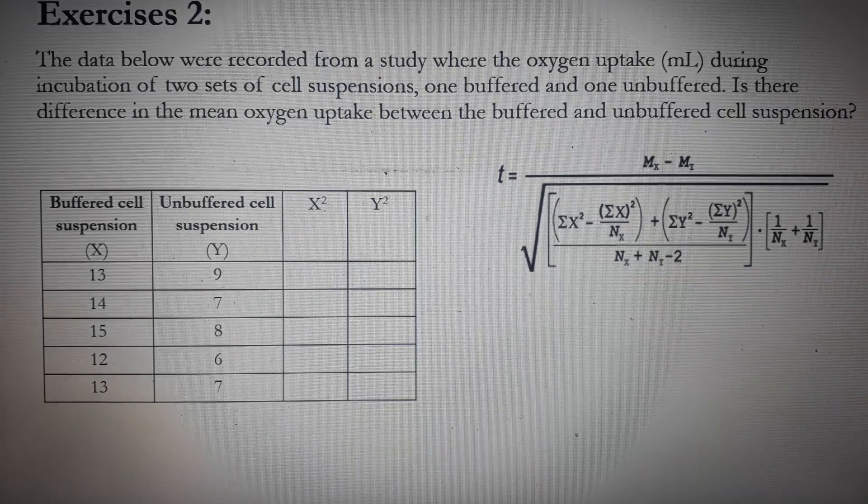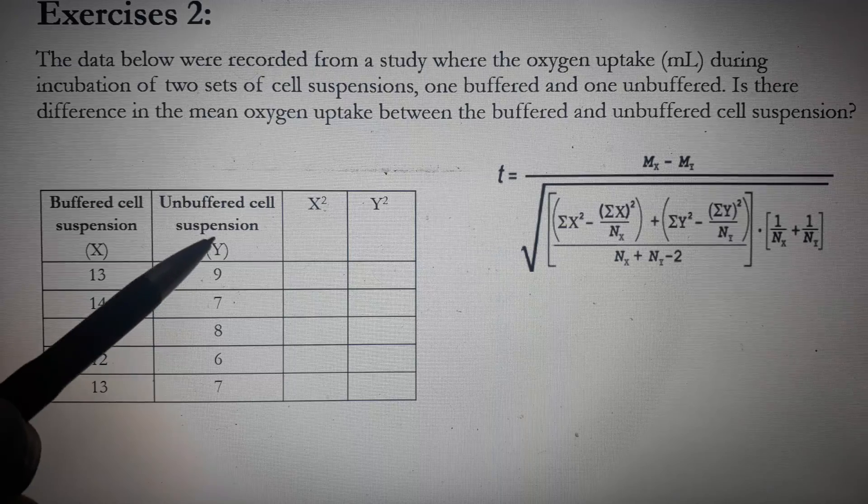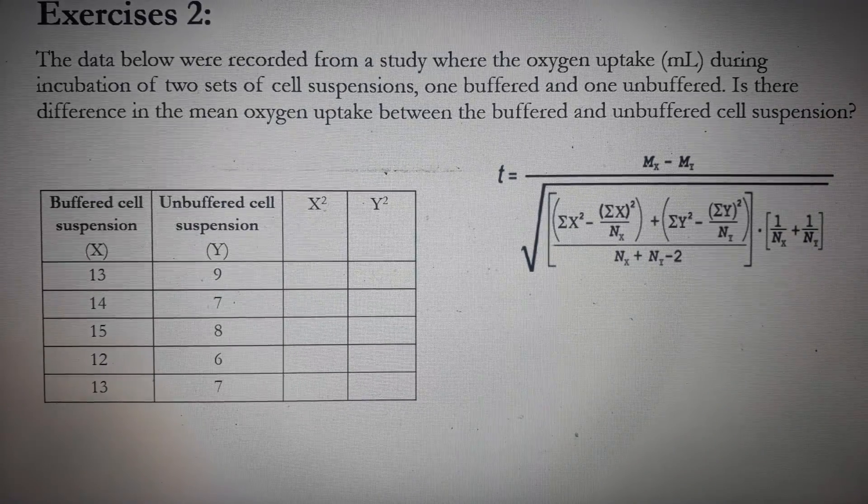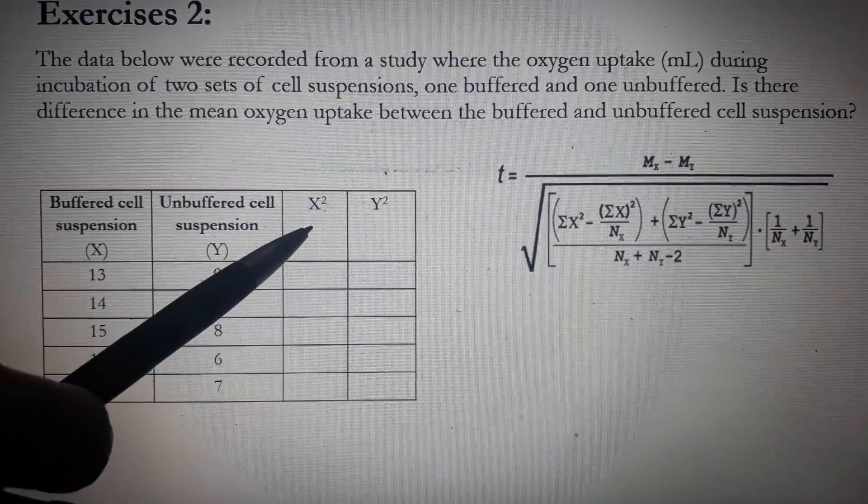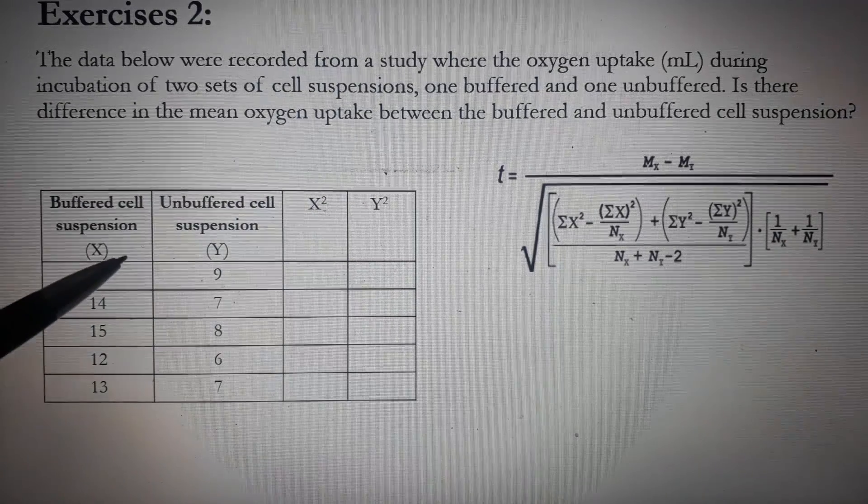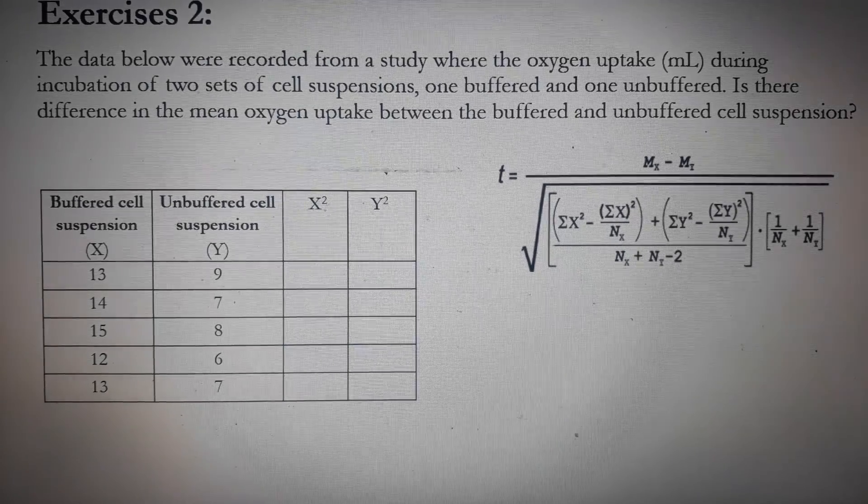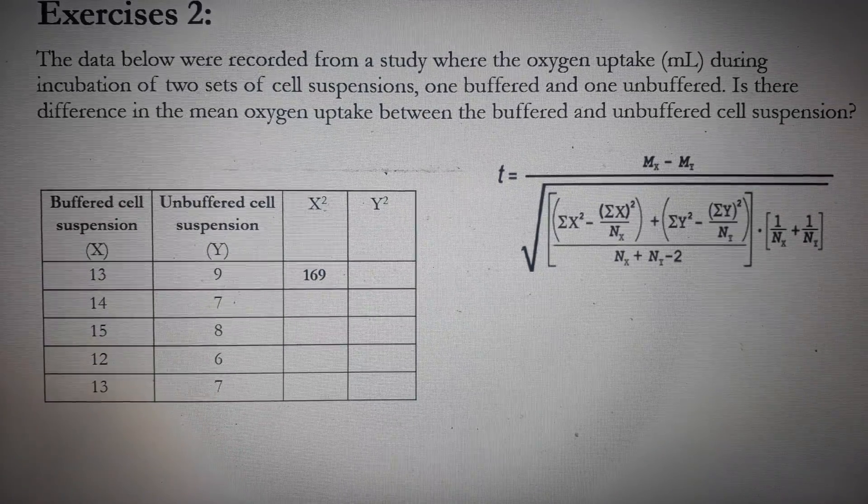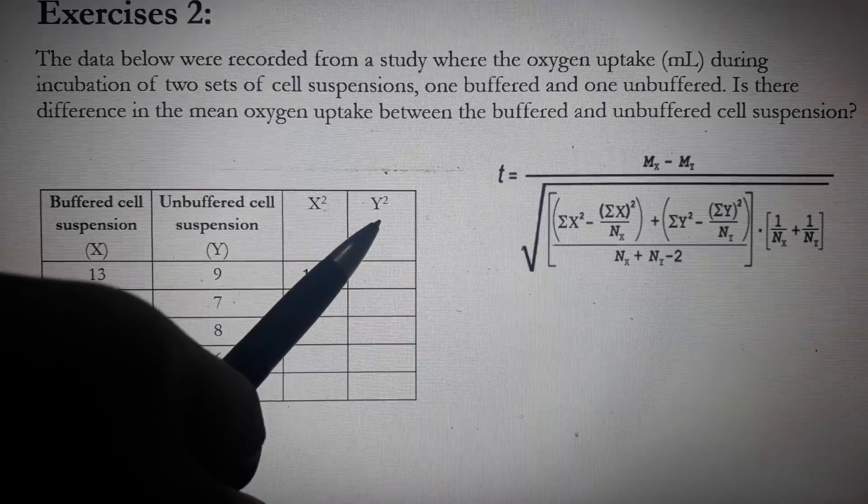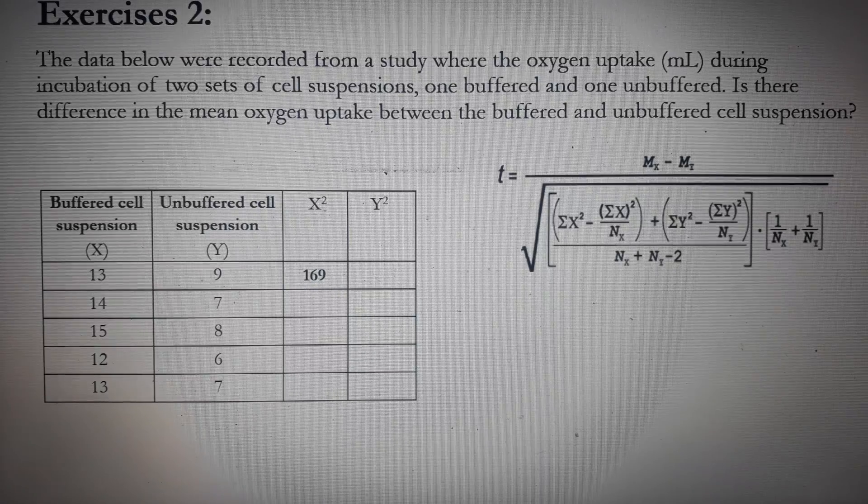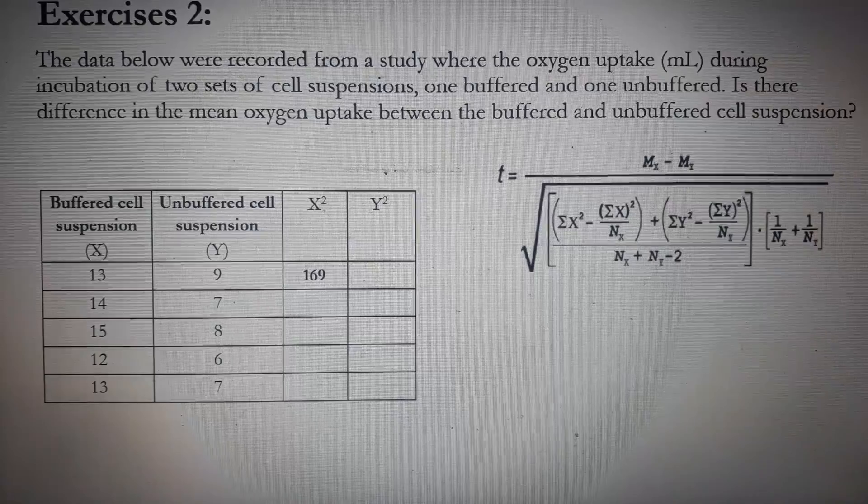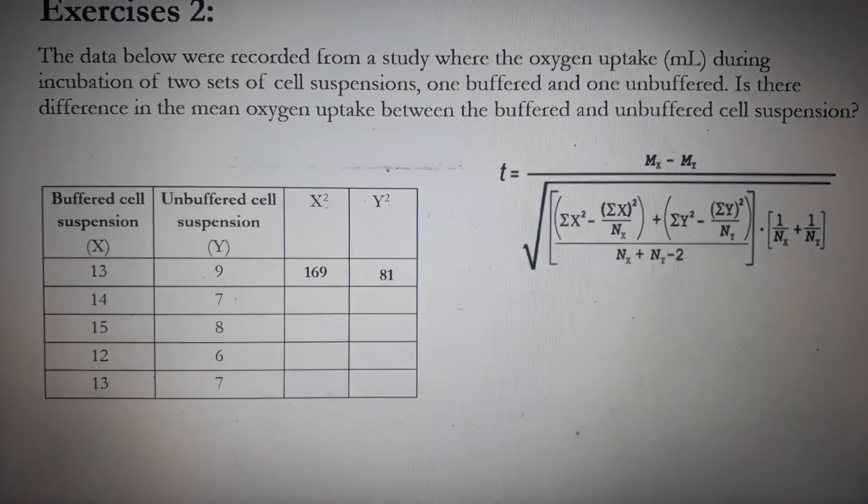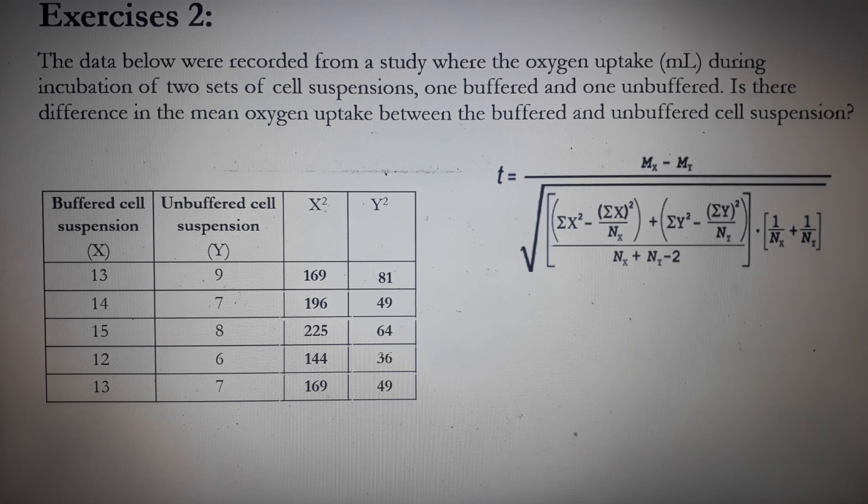The second column is the data for the second group or second set up, the y group and these are the oxygen uptake. The third column is labeled as x squared. So we will simply square the values on the x column. So the first entry is 169. It came from squaring the 13. And the last column is labeled as y squared. You simply square the data on the y column. So our first entry is 81. It came from squaring the 9. That's how we complete the data.